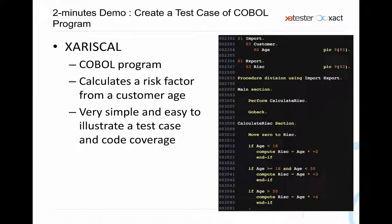We will show a concrete demo of how to create a simple test case for a COBOL program called XA RISCAL. This is a WebAssembly COBOL program — you can see the complete source code on the slide. The program takes one input parameter, the age of a customer, and calculates a risk factor based on that age. It's very simple and not a real-world example, but it's great for illustrating what you can do with XA Tester.